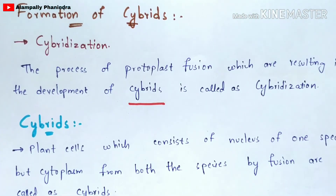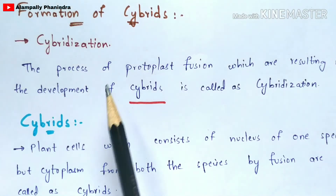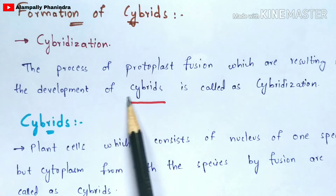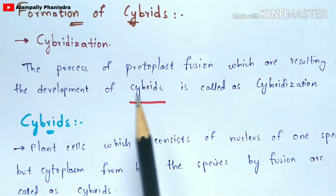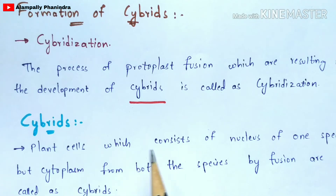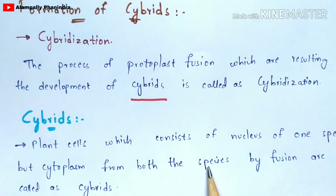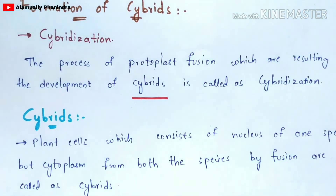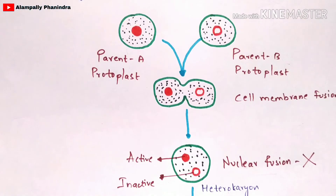Now let us discuss the formation of cybrids. The process of protoplast fusion resulting in the development of cybrids is called cybridization. Cybrids are plant cells which consist of the nucleus of one species but cytoplasm from both species, formed by fusion.